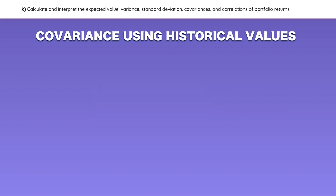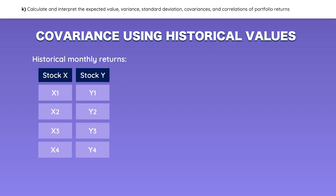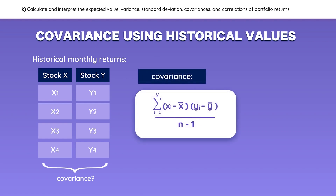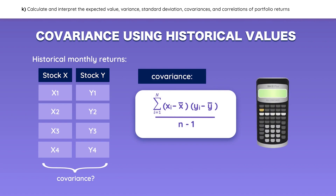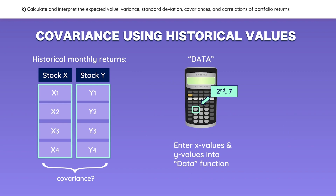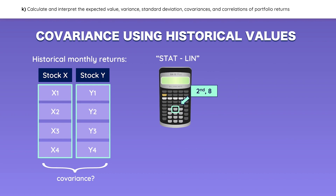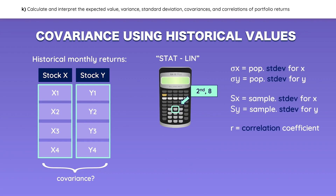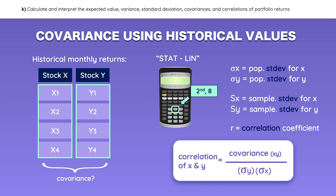This is a key formula to calculate covariance. If you're given a series of historical values and asked to calculate covariance — for example, historical monthly returns for stocks X and Y — you can either use the long covariance formula or use your calculator. Enter the X's and Y's into the data function, then access the STAT function and keep clicking the down arrow. The calculator will automatically calculate standard deviations for a population and sample, as well as the correlation coefficient. You can then plug those values into the formula to solve for the covariance.